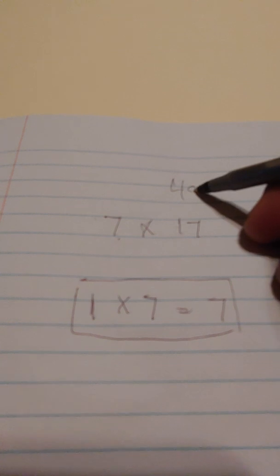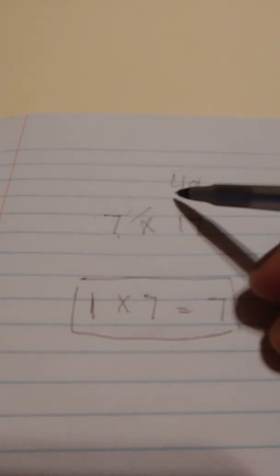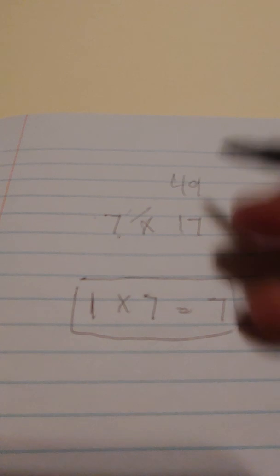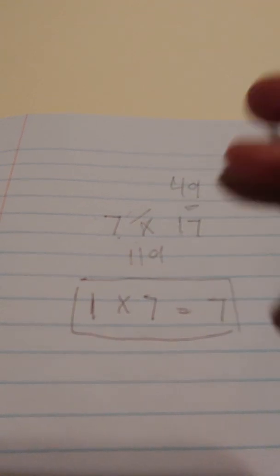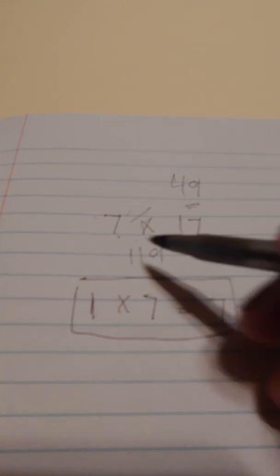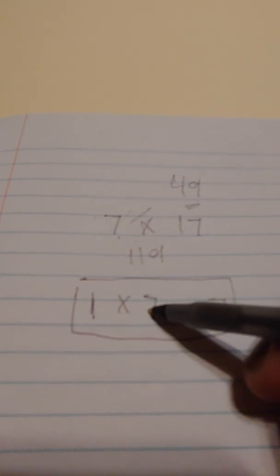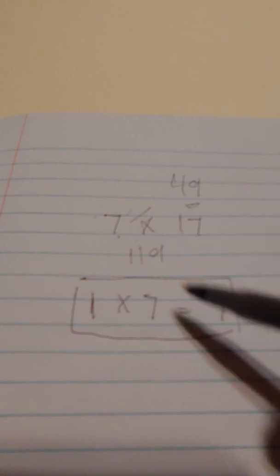We say to ourselves, 7 times 17. What we're really asking is, what is 7 times 7? And that's a 49. And then there's a 1. The 1 is this 7 right here. So now you're going to add the 7 to the 4 and make 11. And that's going to be your first part of the answer. So now you've got 11 and a 9. That's the answer right there. Simple as that. So 7 times 17 is 119.